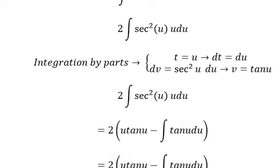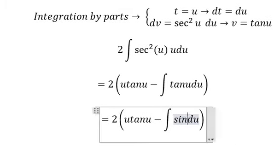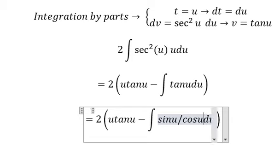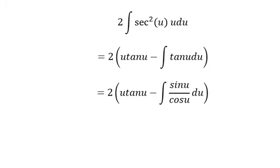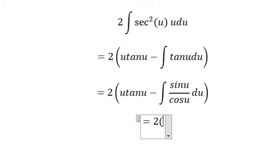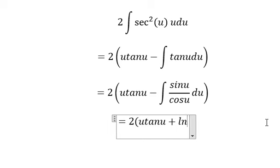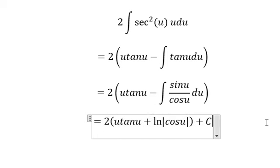For tan u we need to change into sine u over cosine u. And now we got the final answer. The integral of negative sine u over cosine u equals positive ln of the absolute value of cosine u, and we put c in here.